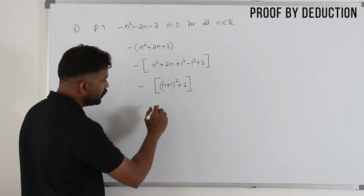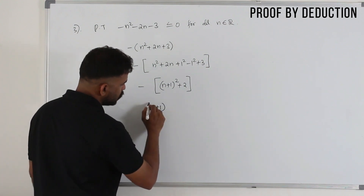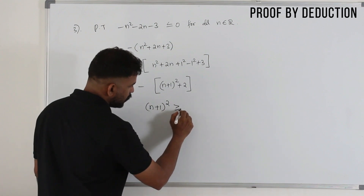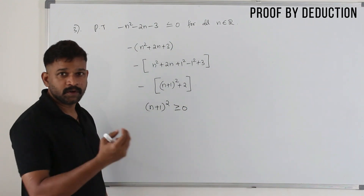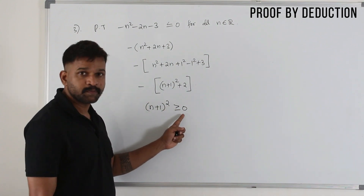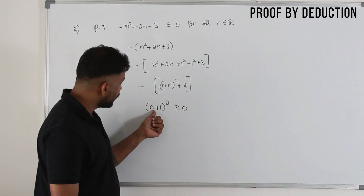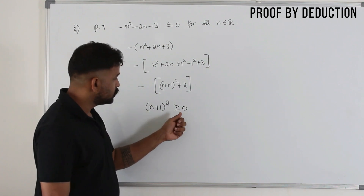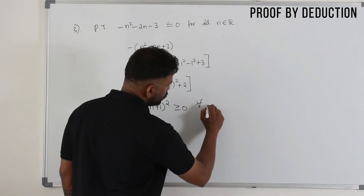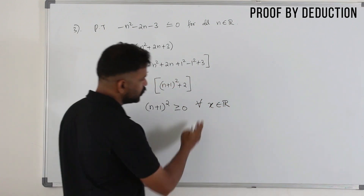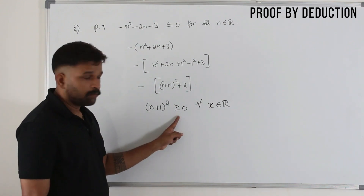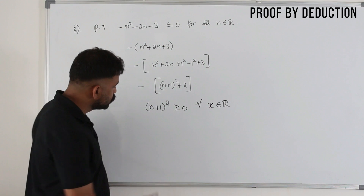Now listen carefully. We know n plus 1 whole square will always be greater than or equal to 0 because of the square — even if it's a negative number, squaring it makes it positive. When n equals negative 1, negative 1 plus 1 is 0, which is why we use greater than or equal to 0, for all values of n belonging to R. If this is a positive number, then adding 2 is also positive.